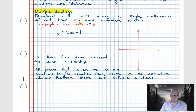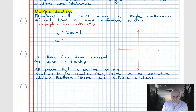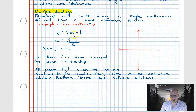In contrast, equations with more than one unknown have multiple solutions. Consider y = 2x + 1. No matter how we rearrange this, y is always dependent on x. We could write it as x = (y - 1) / 2 or in general form as 2x - y = -1. It doesn't matter how we rearrange it — we never get a definitive value for either x or y.